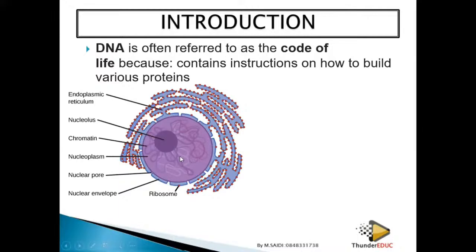DNA is found in the nucleus. This is the structure of the nucleus, as you may remember from grade 10. If asked where DNA is found, the answer is the nucleus. We call it the chromatin network. When chromatin network condenses, it forms what are called chromosomes.